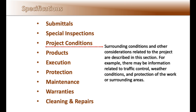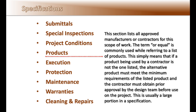The project conditions section describes the surrounding conditions and other considerations related to the project. For example, there may be information related to traffic control, weather conditions, and protection of the work or surrounding areas. The products section lists all the approved manufacturers or contractors for this scope of work. The term 'or equal' is commonly used when referring to the list of products — meaning that if a product being used is not one of those listed, the alternative product must meet the minimum requirements of the listed product, and the contractor must obtain prior approval from the design team before use on the project.